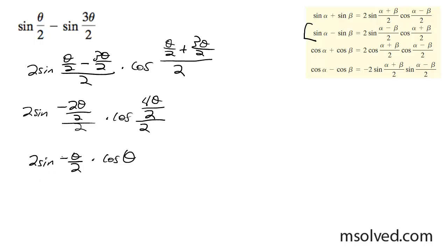I can pull this negative out of the sine because it's an odd function. This becomes negative 2 sine theta divided by 2 times the cosine theta.